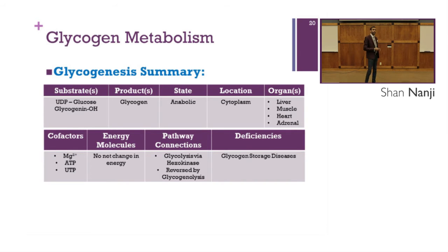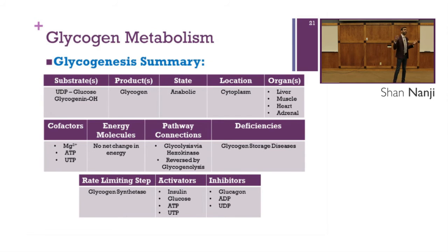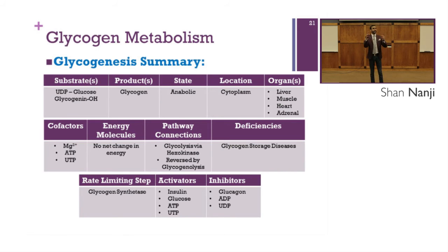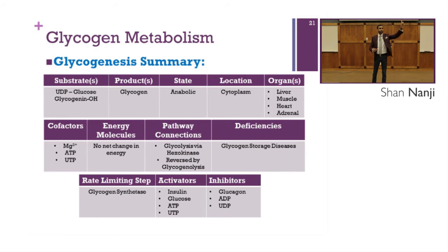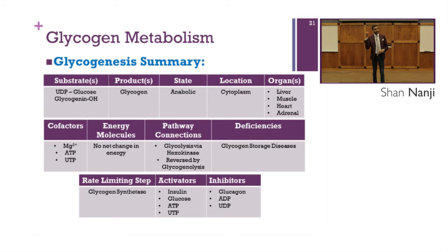The rate-limiting enzyme is glycogen synthetase, with four activators and three inhibitors. The four activators are insulin, glucose, ATP, and UTP. The three inhibitors are glucagon, ADP, and UDP.